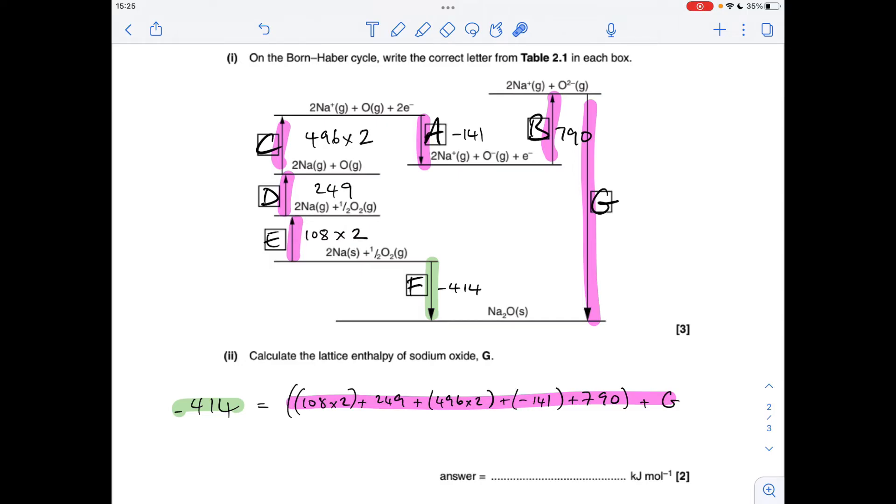And likewise for the first ionization energy of sodium, we've got two moles of sodium gaseous atoms going to two moles of sodium 1+ gaseous ions, and so that's double the first ionization energy, hence the two there. All the others are as per the definition, so we didn't need to touch them.